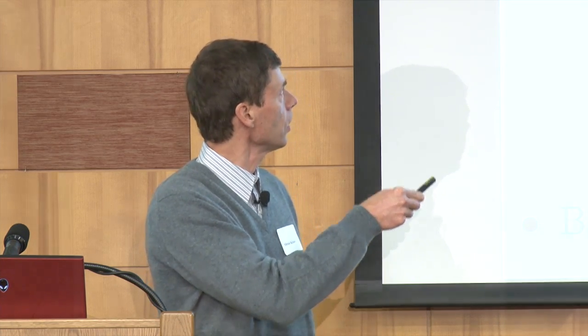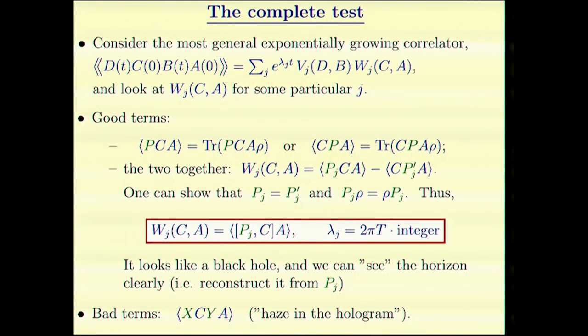So we have a test. If we are to reproduce a black hole, if we want to have a clean diagram, not hazy, then the correlator should have this form.